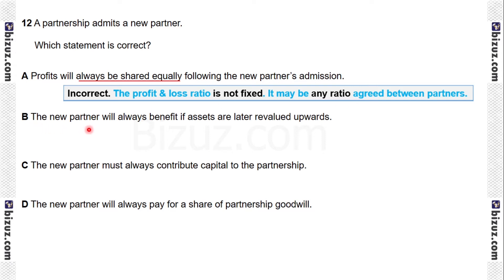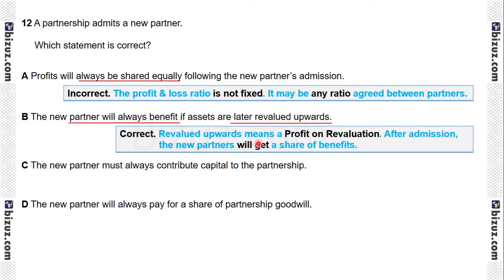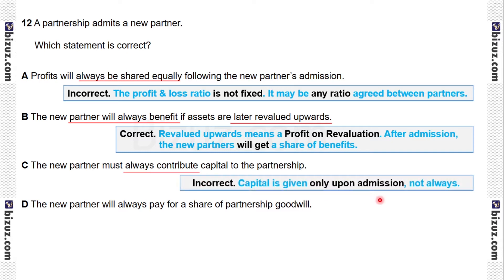Option B: the new partner will always benefit if assets are later revalued upwards. This is correct because revaluation upwards means a profit on revaluation, so after admission the new partner will get a share of benefits. Option C: the new partner must always contribute capital to the partnership. This is incorrect because capital is given only upon admission, not always — sometimes partners may not pay capital and can only work for the business, gaining a profit or loss ratio.